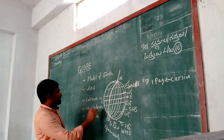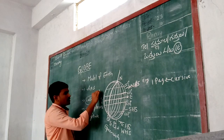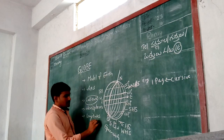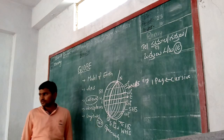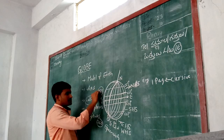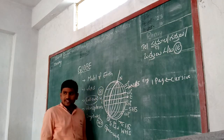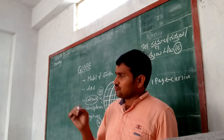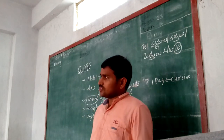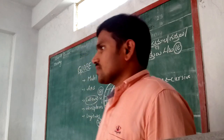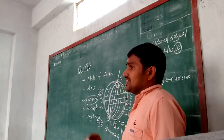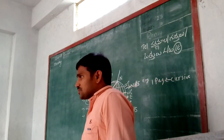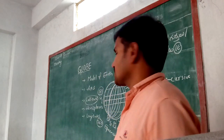The total latitudes are 181. In the Northern Hemisphere there are 90 latitudes, in the Southern Hemisphere there are 90 latitudes, and with the equator the total latitudes are 181. The total longitudes are 360 — 180 in the Eastern Hemisphere and 180 in the Western Hemisphere.